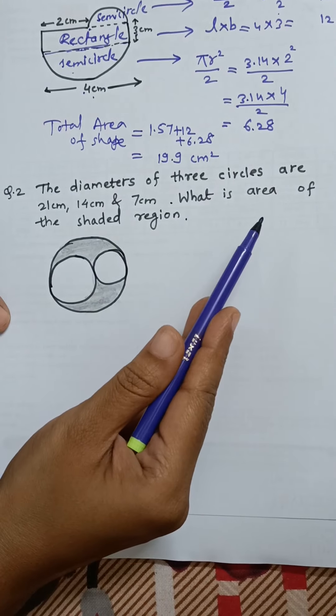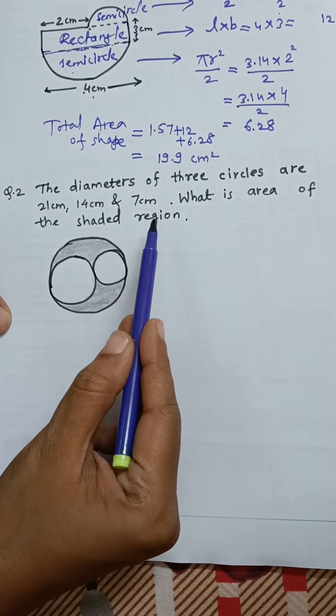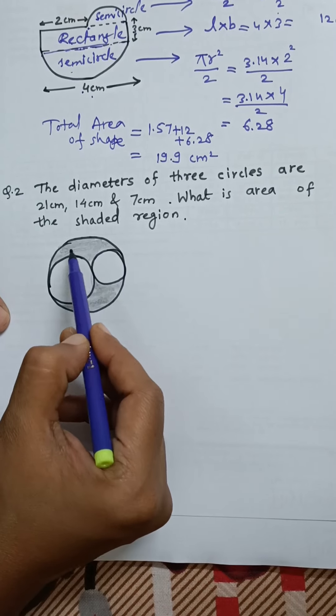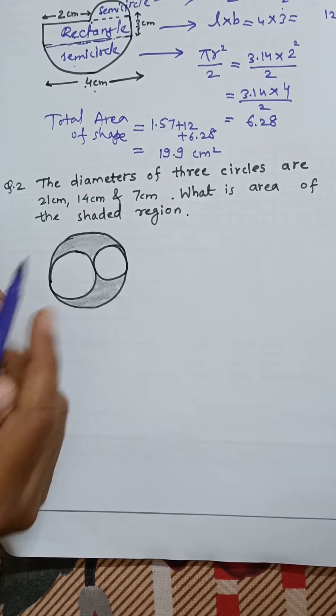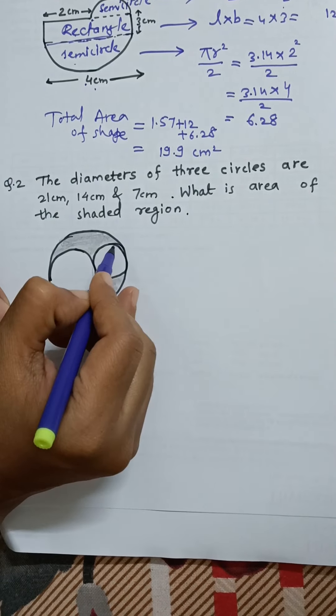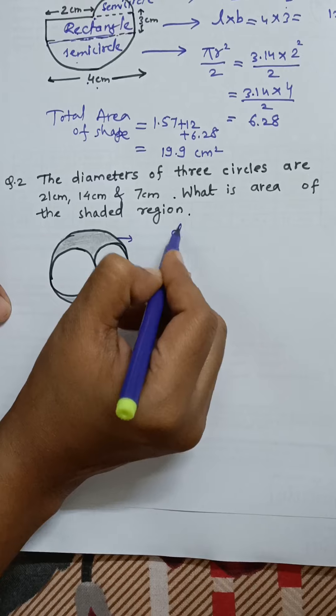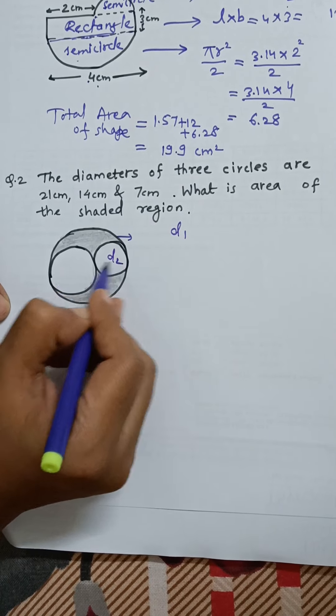Now the second question: the diameters of three circles are 21 centimeter, 14 centimeter, and 7 centimeter. What is the area of the shaded region? You can see this is the shaded region and we have three circles provided with the diameters. Let's see, outer diameter is d1, inner one is d2, and this is d3.